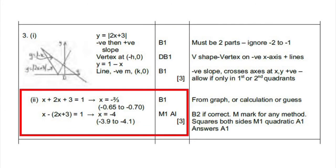For part (ii), getting x equals negative 2 over 3 where 2x plus 3 equals 1 minus x as a positive value earns one mark. Setting 2x plus 3 equal to the negative of 1 minus x earns another mark. And getting x equals negative 4 earns another mark.